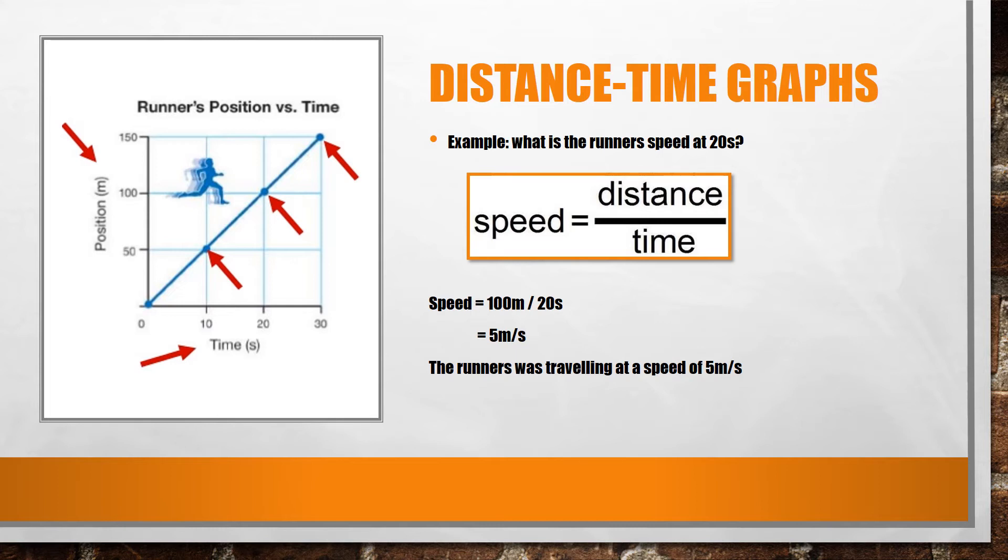Remember, this was found by going to our x-axis, where we have 20 seconds. We follow up until we hit the runner's path, and then across to our y-axis, where it says 100 meters. We then substitute these values into our formula. Our distance is 100 meters. Our time is 20 seconds. 100 meters divided by 20 seconds gives us 5 meters per second. That means that the runner was traveling at a speed of 5 meters every second.